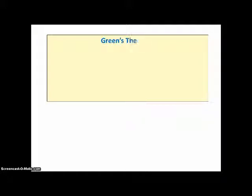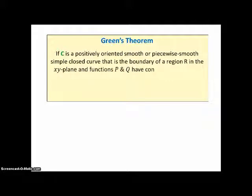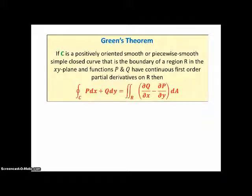Here's Green's Theorem again. If C is a positively oriented, smooth or piecewise smooth, simple closed curve that is the boundary of a region R in the xy-plane, and functions P and Q have continuous first-order partial derivatives on R, then the line integral P dx plus Q dy is equal to the double integral over the region of the partial derivative of Q with respect to x minus the partial derivative of P with respect to y, over said area.